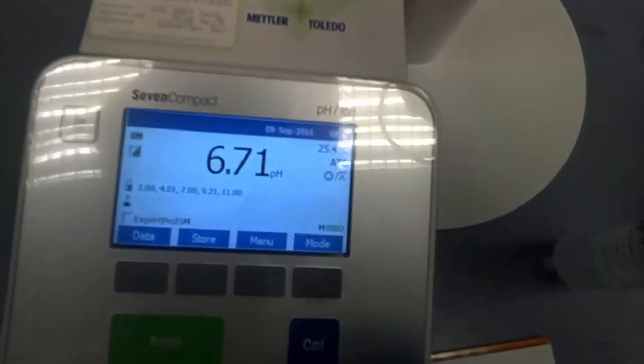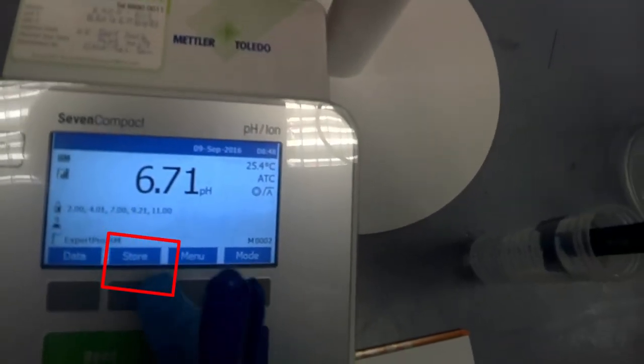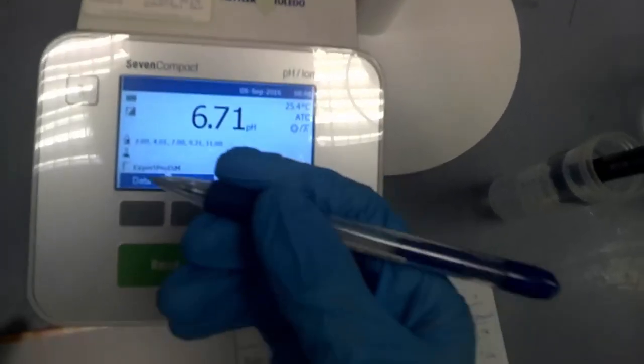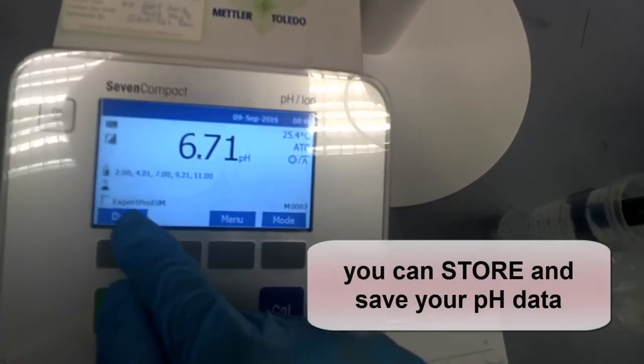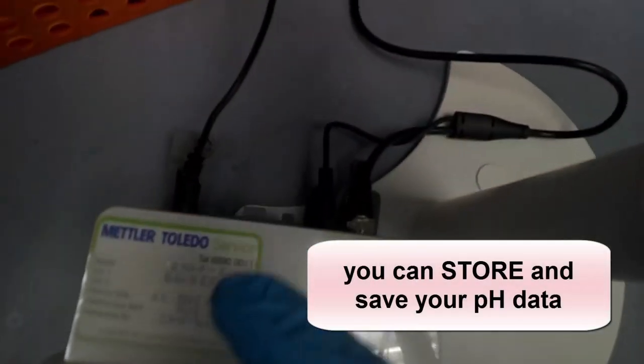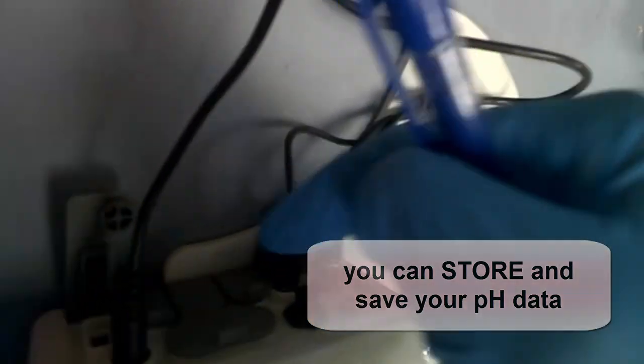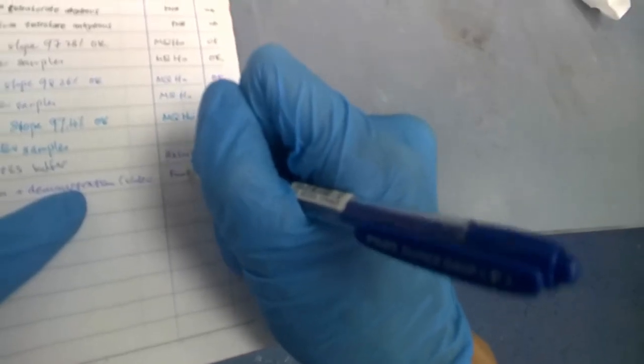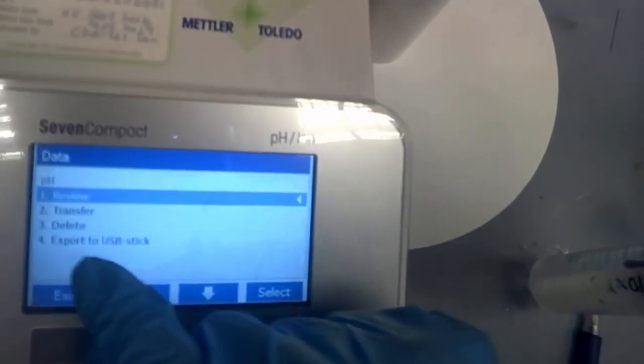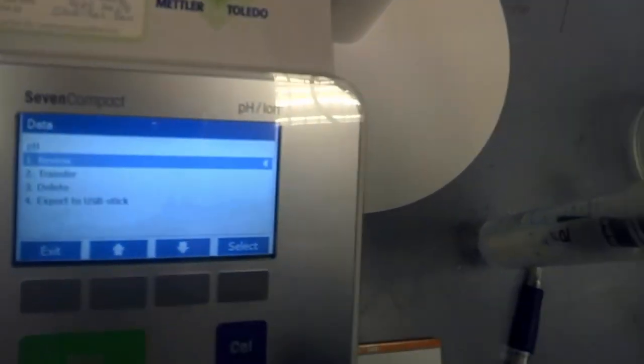So in this case, you see that now, this icon here that says store. That means, in case you're measuring many pH, you can't copy down because your hands are not free. You can store it first. So this reading will be saved. And later, you can even export this data by using a thumb drive. At the back here, there's a USB port at the back of this pH meter. And for data, you can actually export to USB stick at the back there.